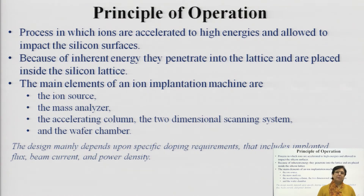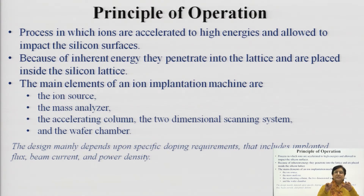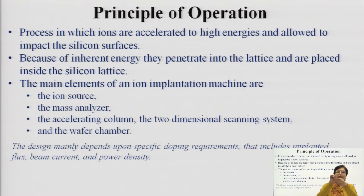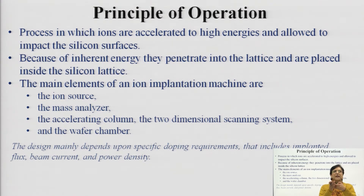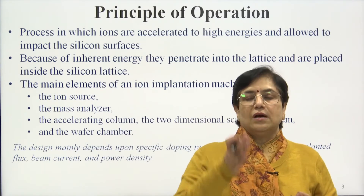Since ion implantation is different from diffusion — where diffusion is basically movement of dopant species into the bulk — in ion implantation the ions are accelerated to high energies and these energized dopant species are allowed to impact and get injected into the bulk. When they strike the surface with high energy, they penetrate the crystal lattice. Wherever there are dangling bonds, those are replaced by the dopant species striking against the silicon material.